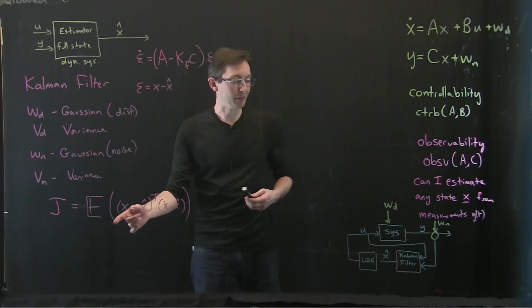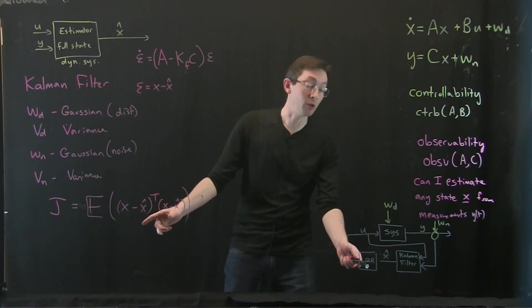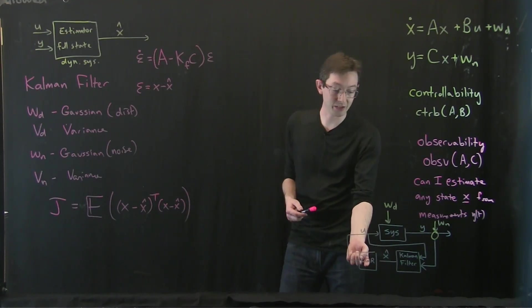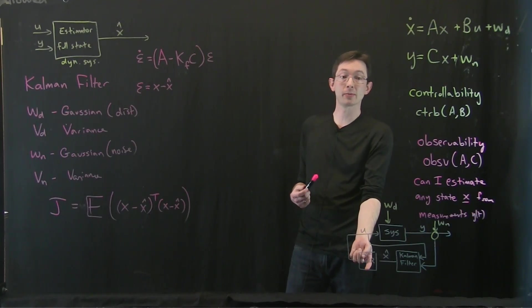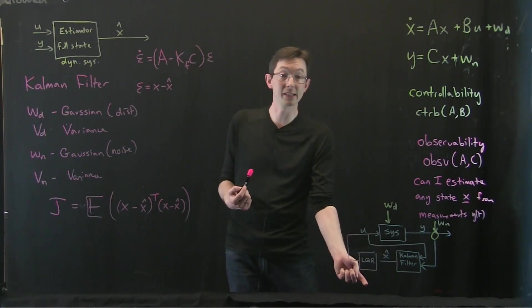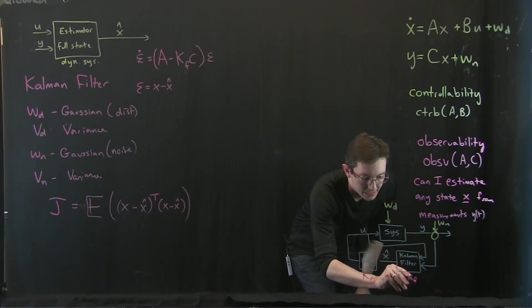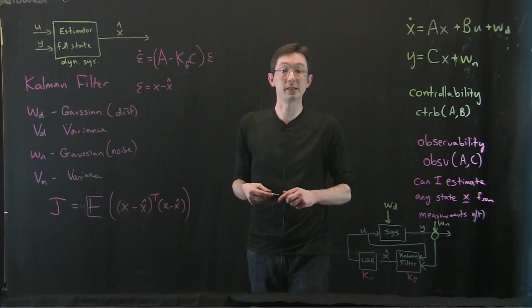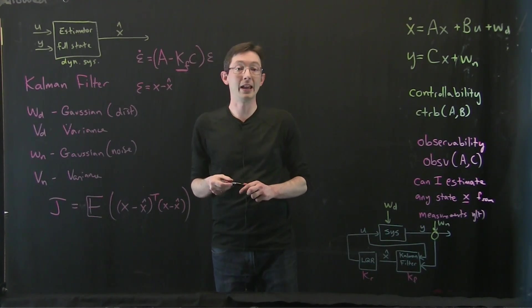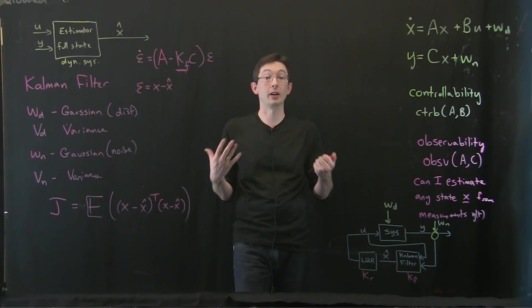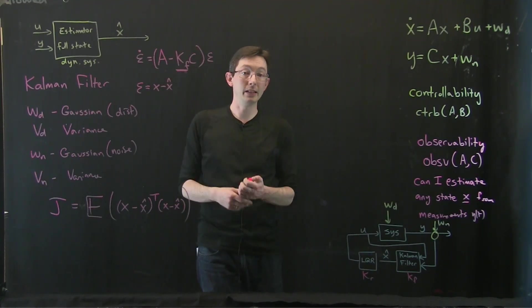And it doesn't look like it, but this can be written in a form that's almost identical to this LQR cost function. So in fact, I can use the exact same linear algebra guts that I used to solve for this gain matrix, K regulator. I can use the same linear algebra to solve for this Kalman filter gains, Kf. And in particular, we solve something called an algebraic Riccati equation to find these gains.